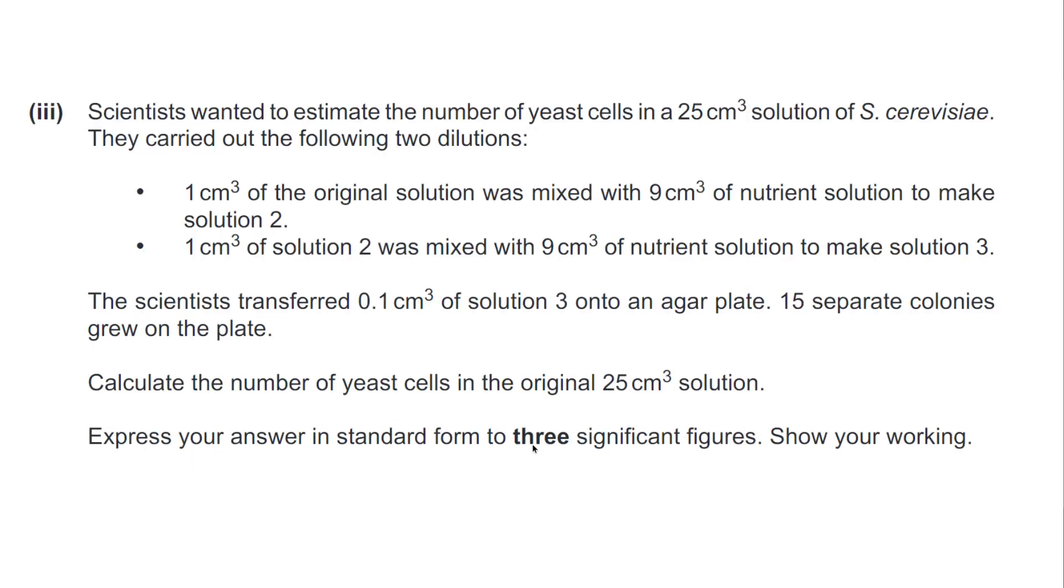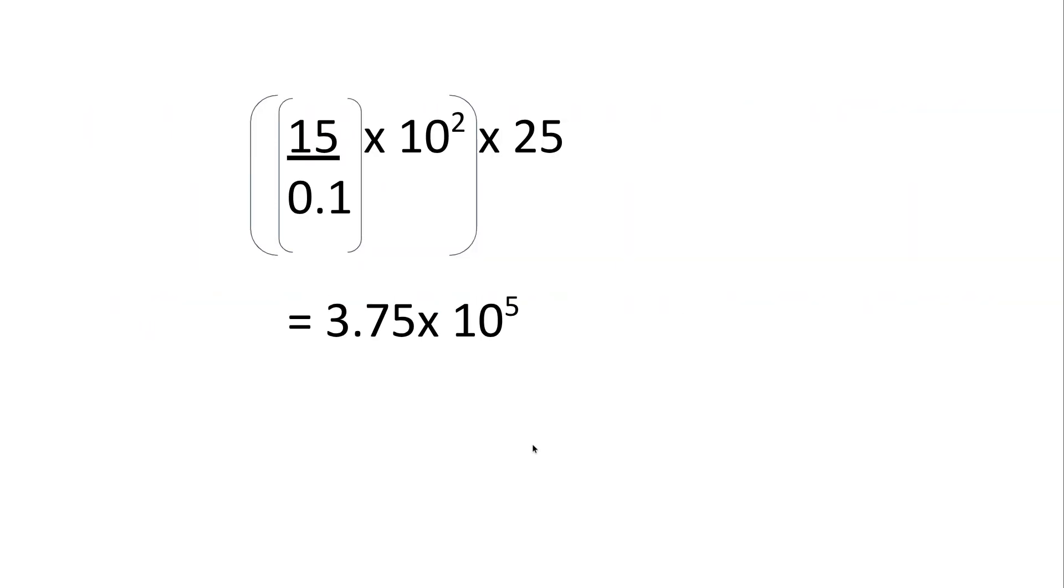Here are some that are slightly more difficult, very typical on the exam, these kind of questions. So again, pause this for a second and have a go. Okay, so here is the answer to this one. So I should be doing 15 over 0.1 times 10 to the 2 times 25, which gives me 3.75 times 10 to the 5.